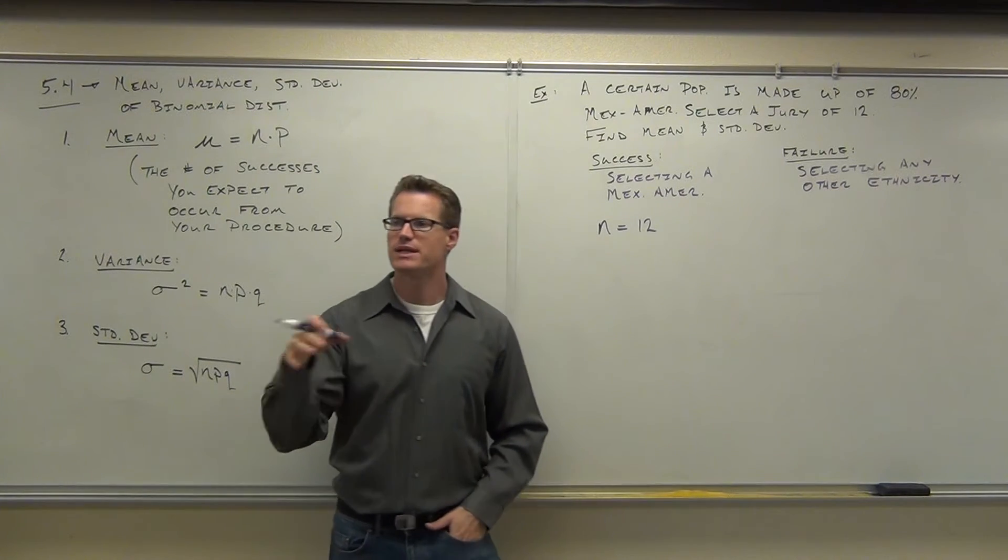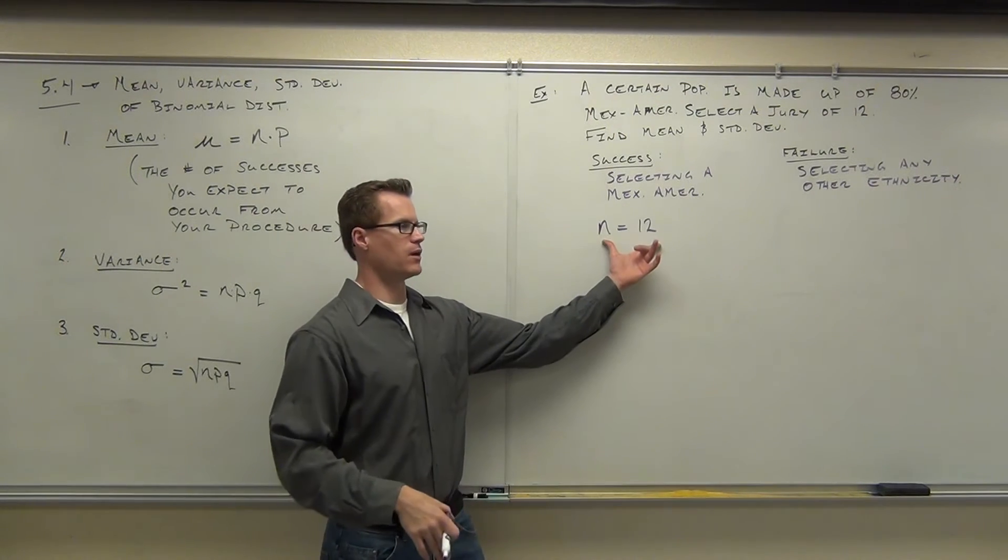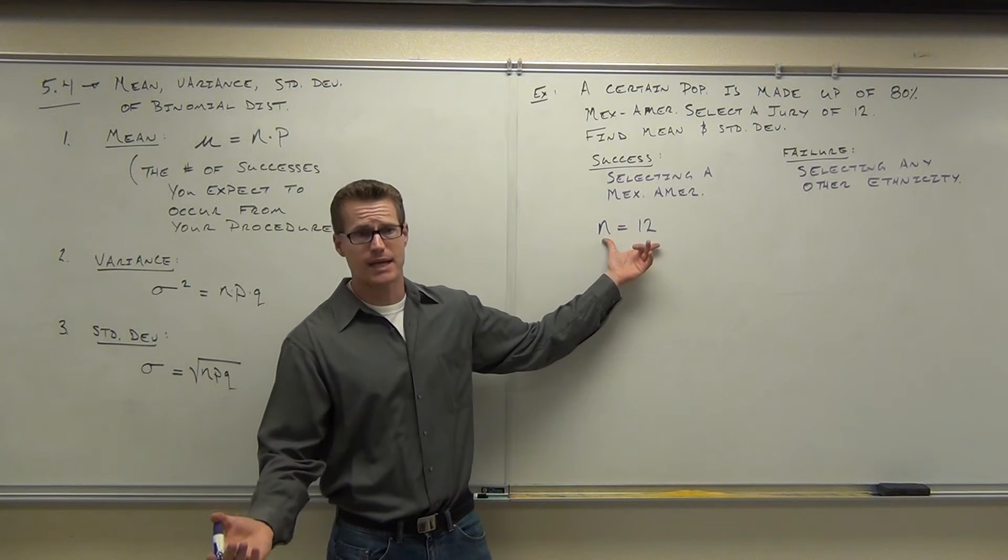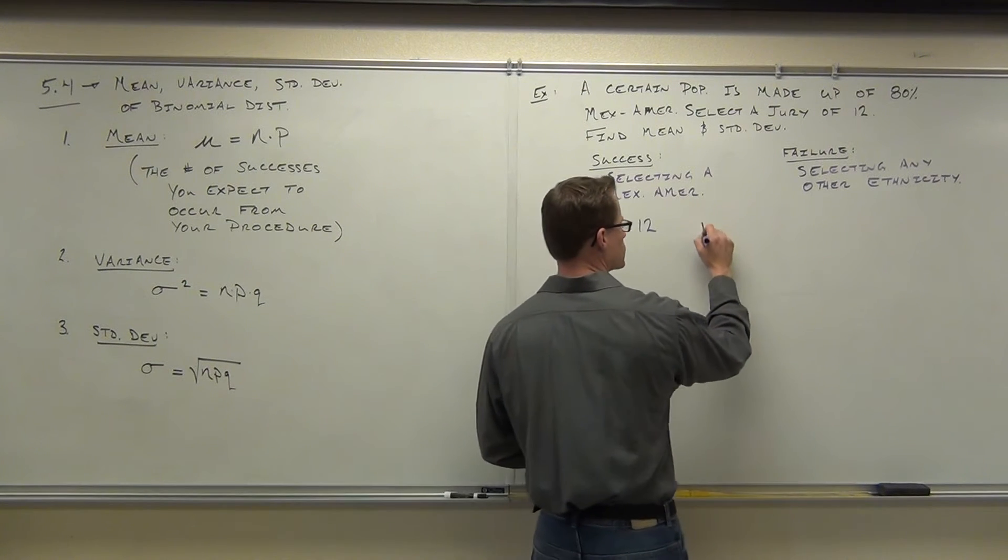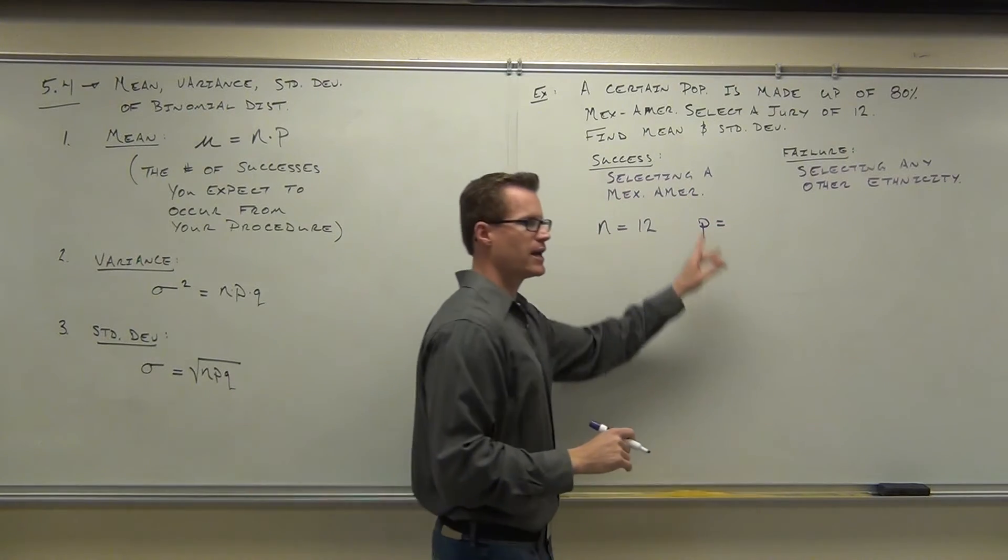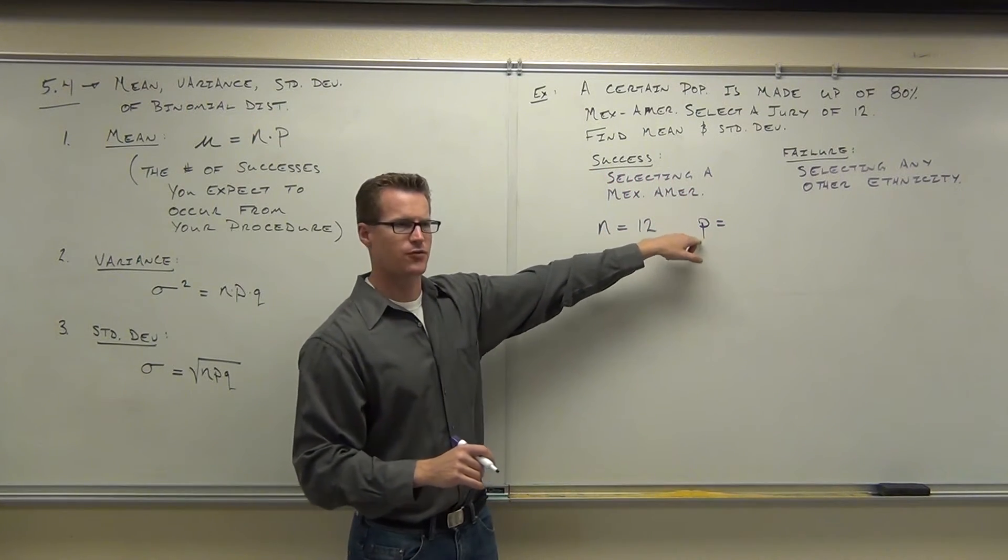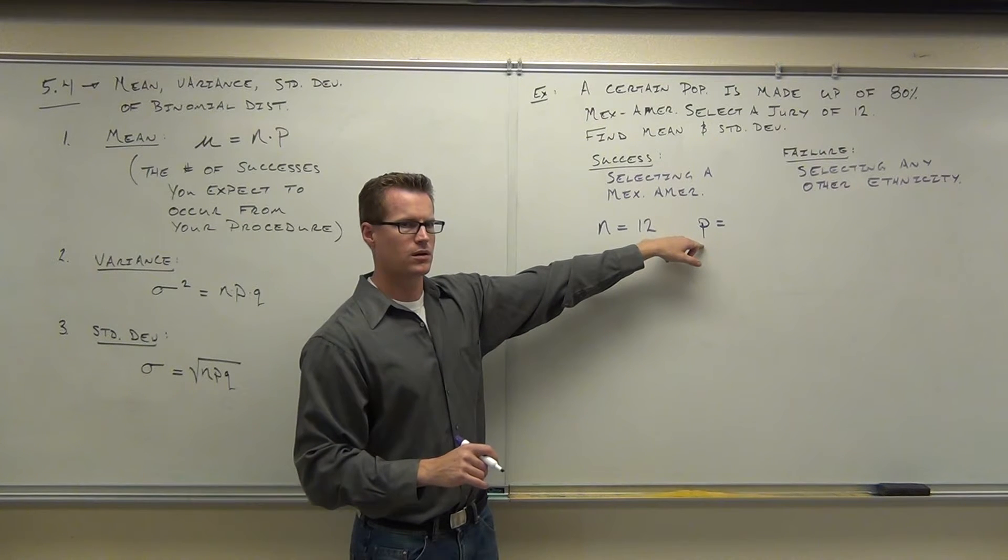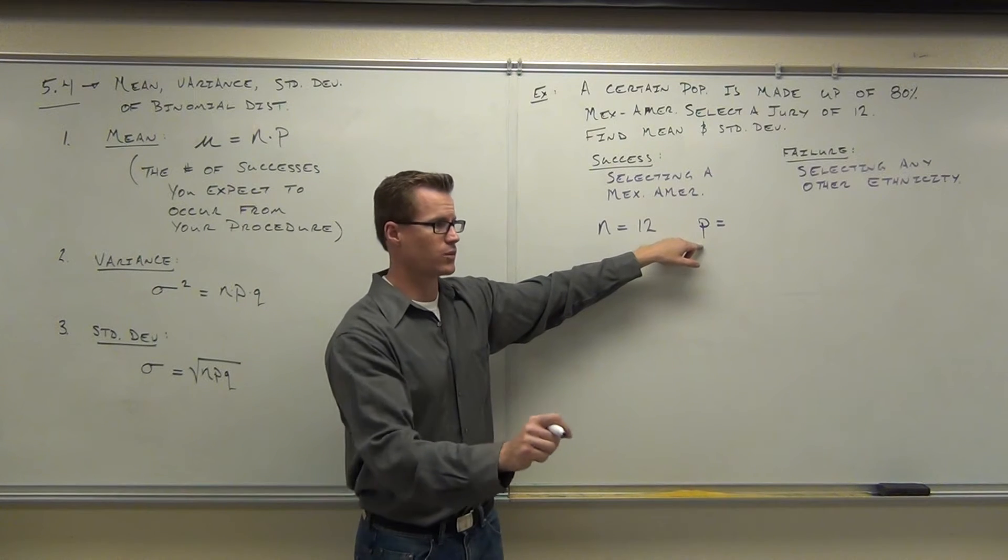Notice how you have to identify your success and your failure before I ask you the next question. You're selecting twelve people, no problem. That's N. Are you all clear on why N is twelve? But before you answer P, notice how you had to identify what a success was. Because what does that lower case letter P stand for? The probability of a successful trial.